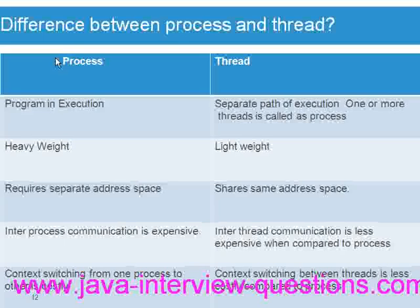In terms of communication, inter-process communication between processes is expensive, whereas inter-thread communication between threads is less expensive when compared to processes.